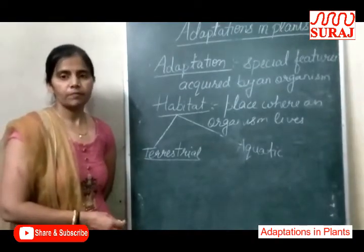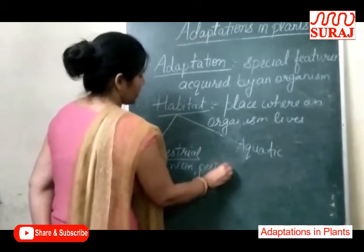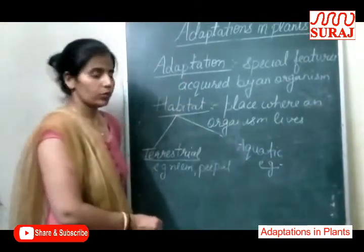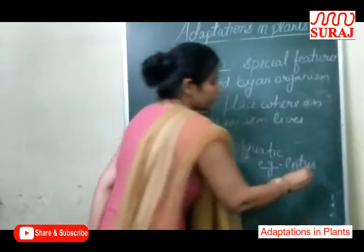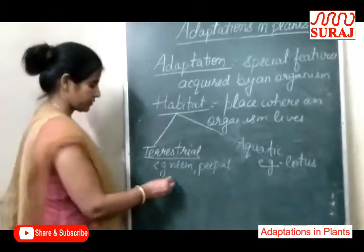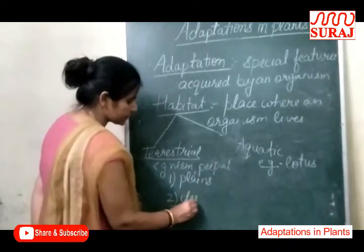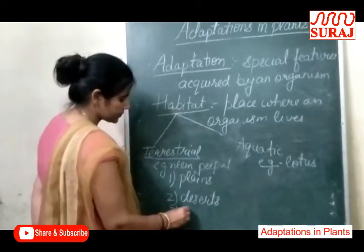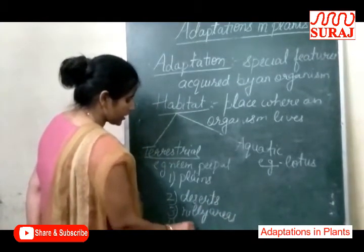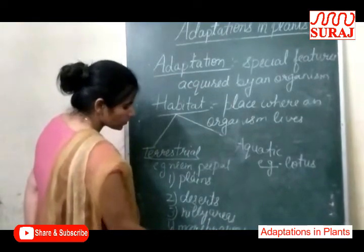Terrestrial Plants — examples include Neem, Peepal, etc. Second, Aquatic Plants: plants that grow in water are called Aquatic Plants. Jo paani mein paate hain, unko bolte hain Aquatic Plants. Example: Lotus, Water Hyacinth, etc. Now, on the basis of occurrence, Terrestrial Plants are of five types: plants that grow in Plains, Deserts, Hilly Areas, Marshy Areas, and Coastal Areas.